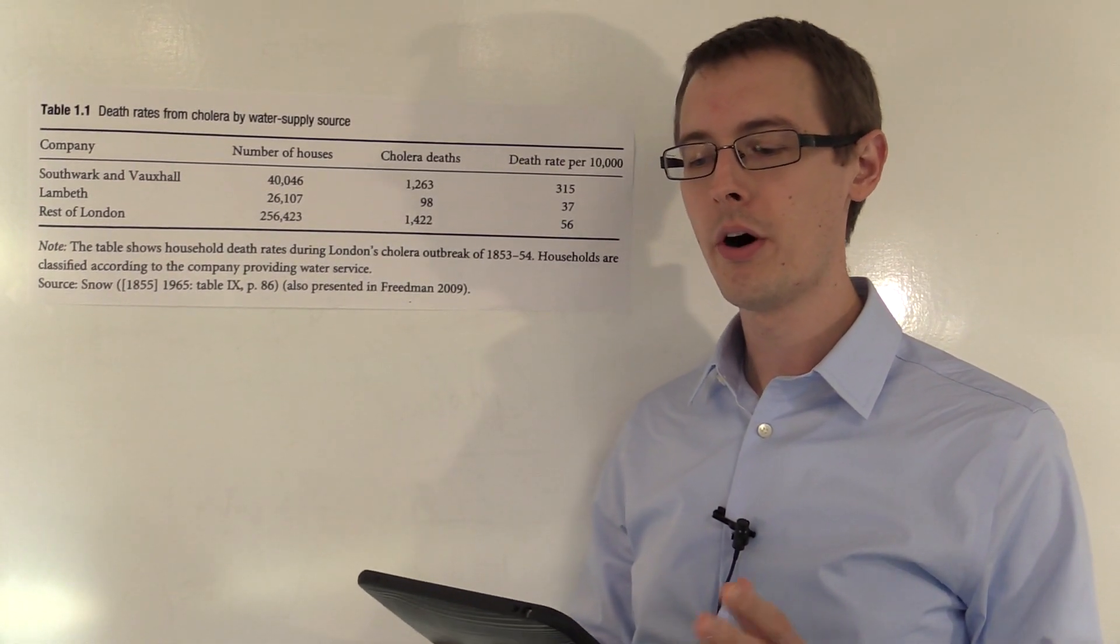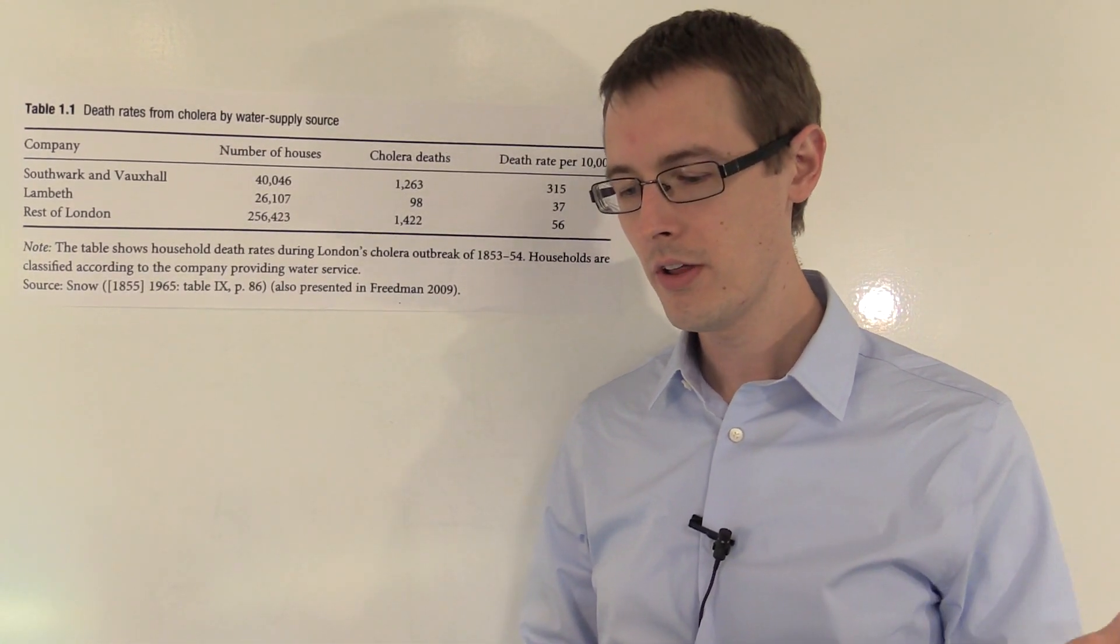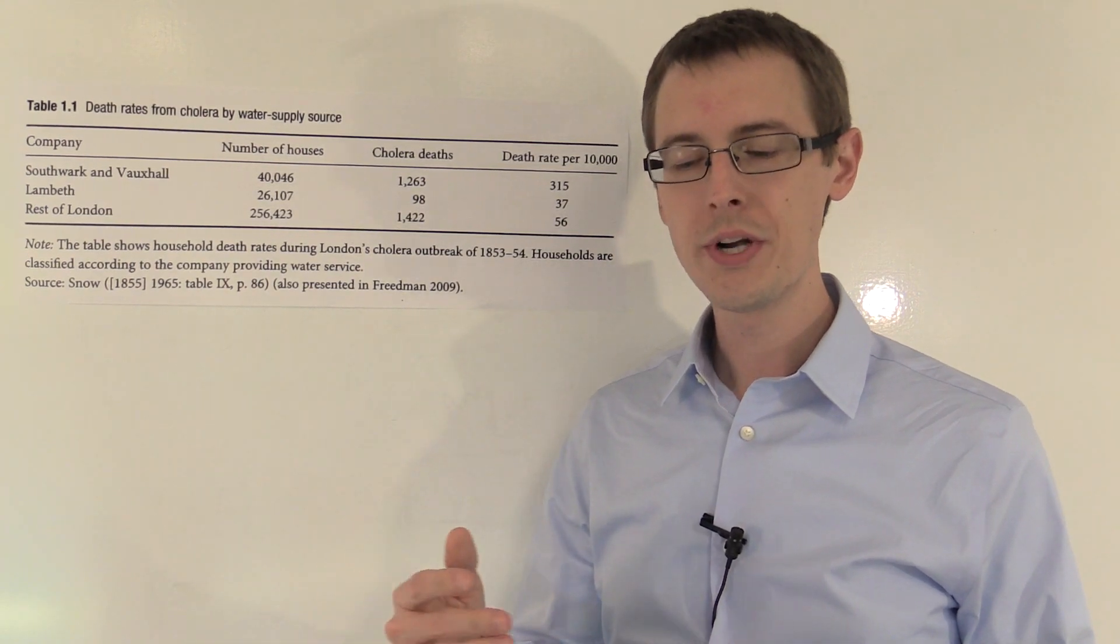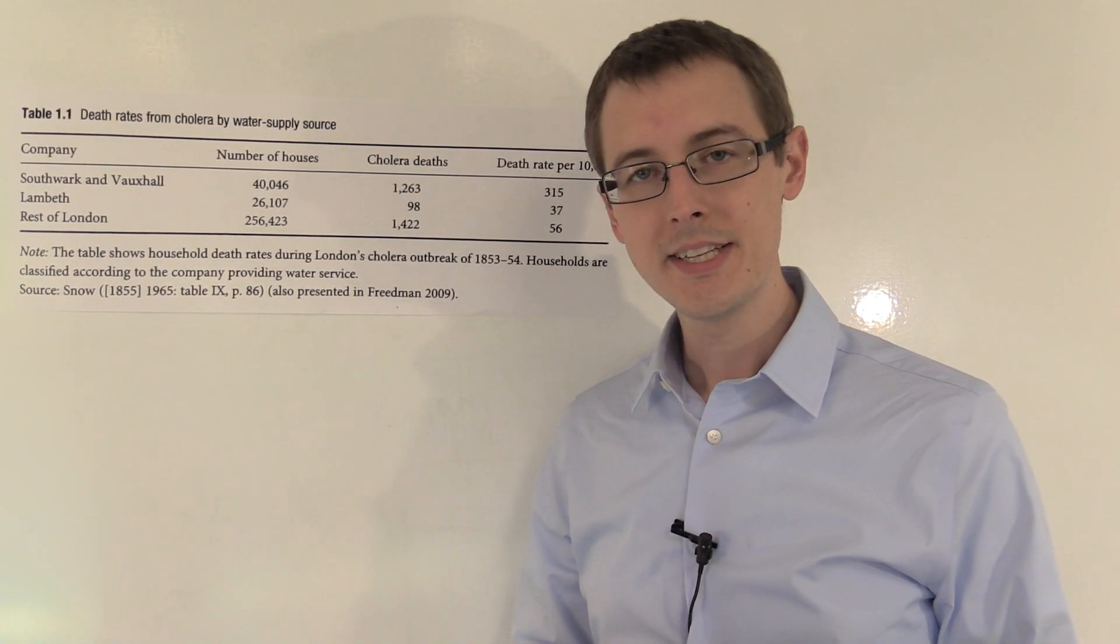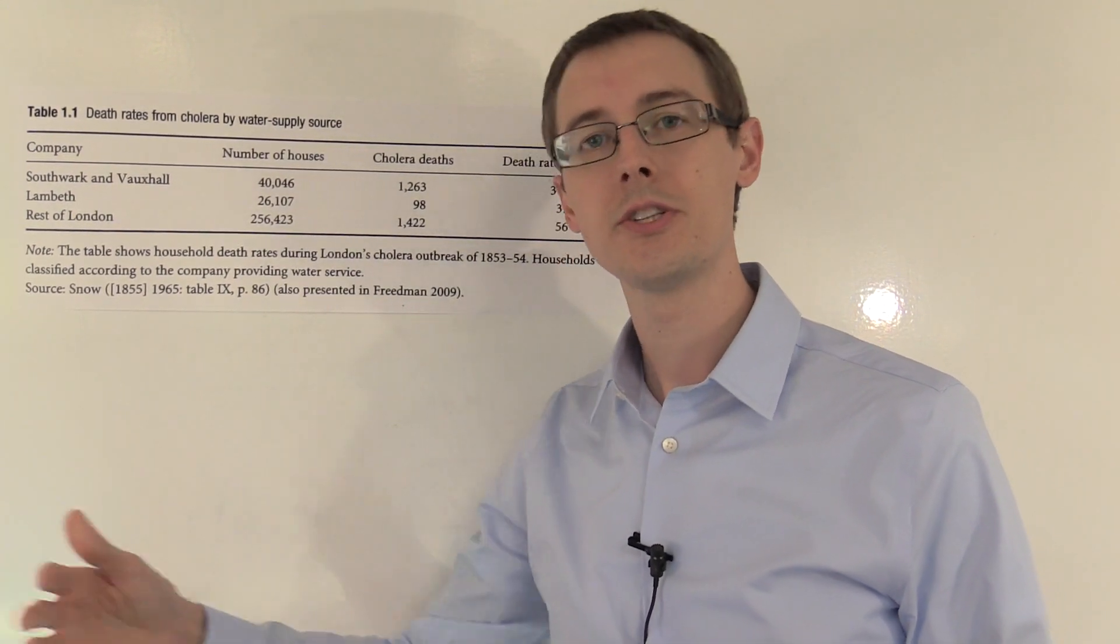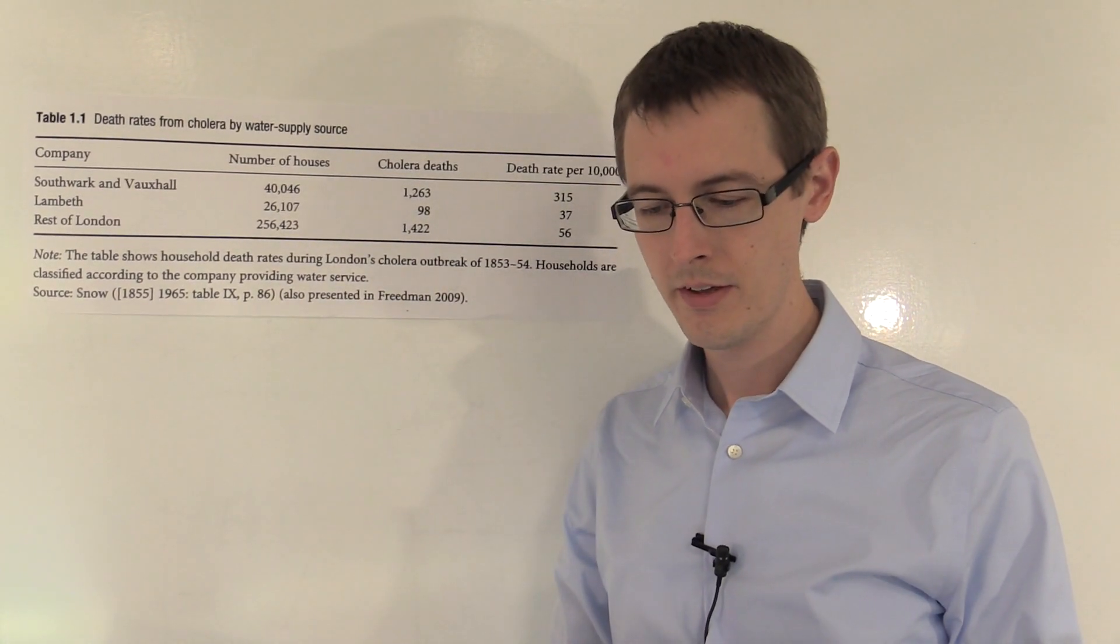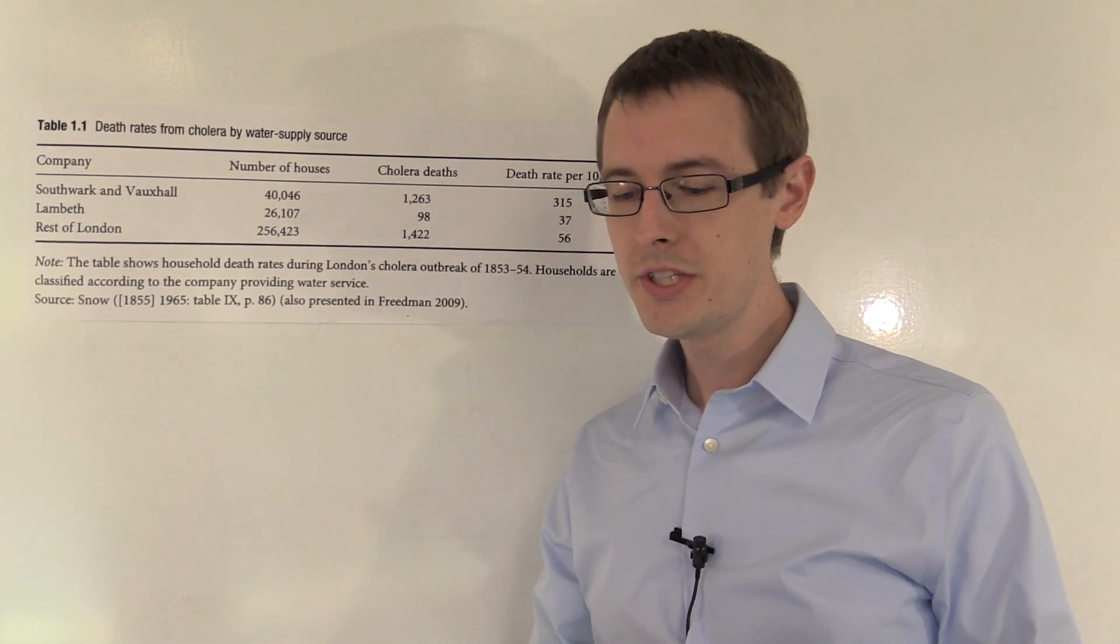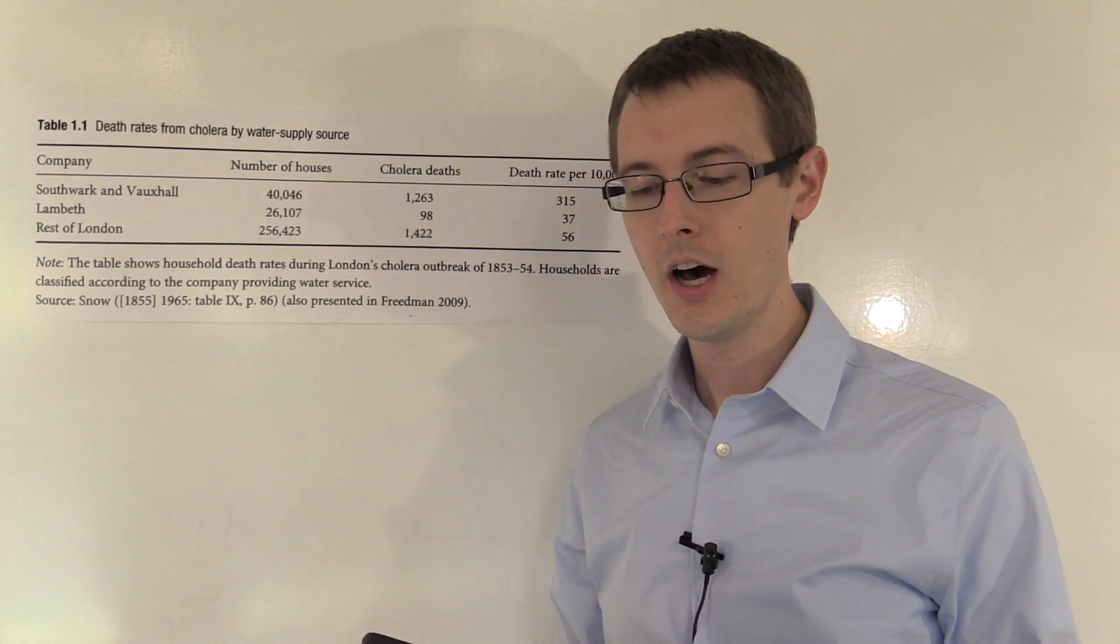Quote, the mixing of the water supply is of the most intimate kind. The pipes of each company go down all the streets and into nearly all the courts and alleys. A few houses are supplied by one company and a few by the other, according to the decision of the owner or occupier at the time when the water companies were in active competition. In many cases, a single house has a supply different from that on either side. Houses on the other side of the streets are supplied by different companies, even though they're on the same street. Quote, each company supplies both rich and poor, both large houses and small, and there's no difference in either in the condition or occupation of the persons receiving the water of the different companies.